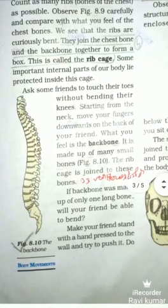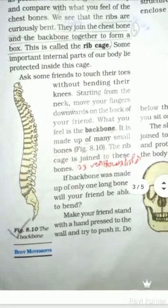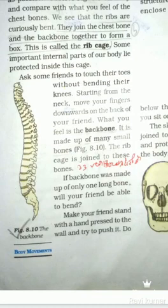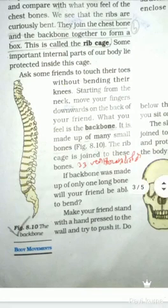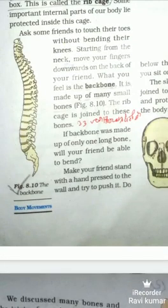The bumps you feel going downwards on the back are the backbone. It is made up of many small bones. The rib cage is joined to these bones, as shown in figure 8.10. If the backbone were made up of only one long bone, would your friend be able to bend?